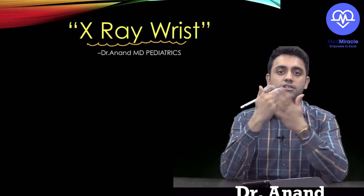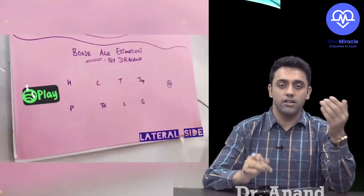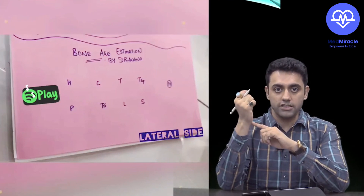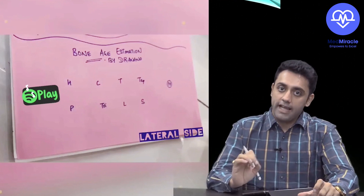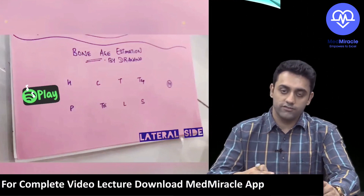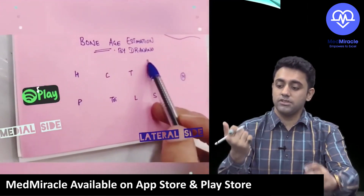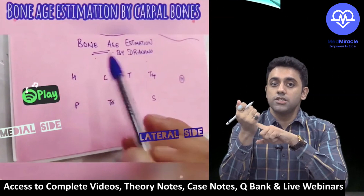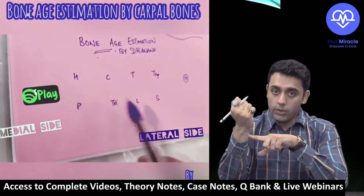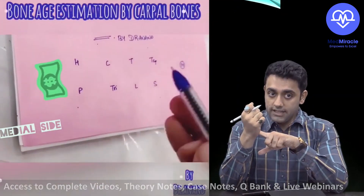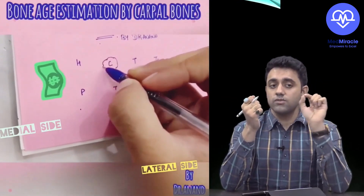The carpal bones — lateral to medial — can be remembered with the mnemonic: 'She Looks Too Pretty, Try To Catch Her,' standing for Scaphoid, Lunate, Triquetral, Pisiform, Trapezium, Trapezoid, Capitate, and Hook of Hamate. This one-minute video explanation will help you solve about 10 MCQs, so please focus carefully.